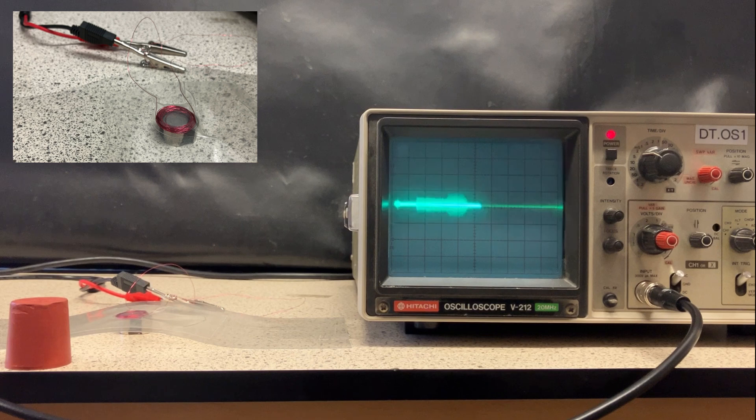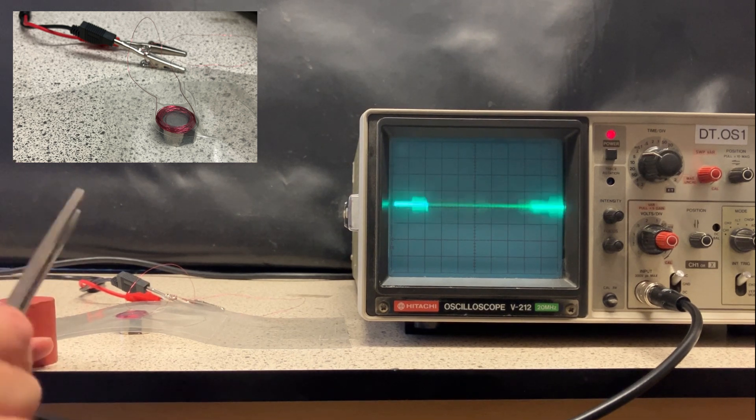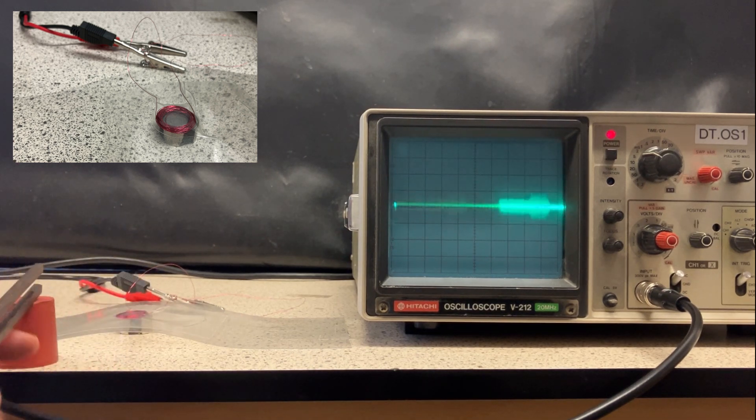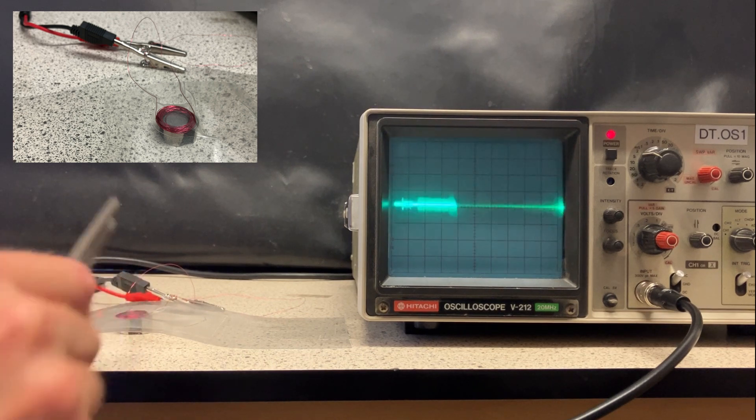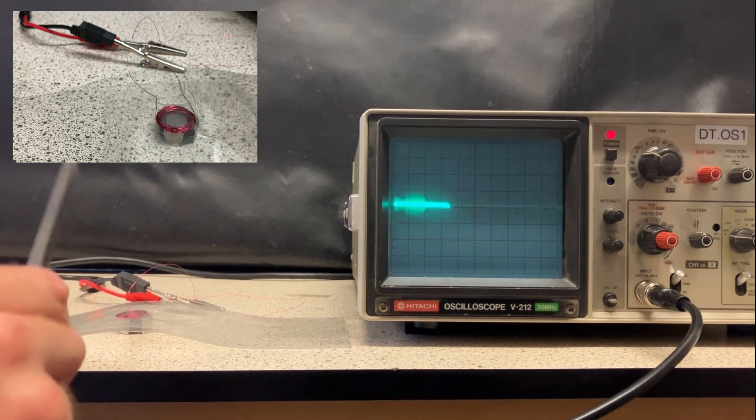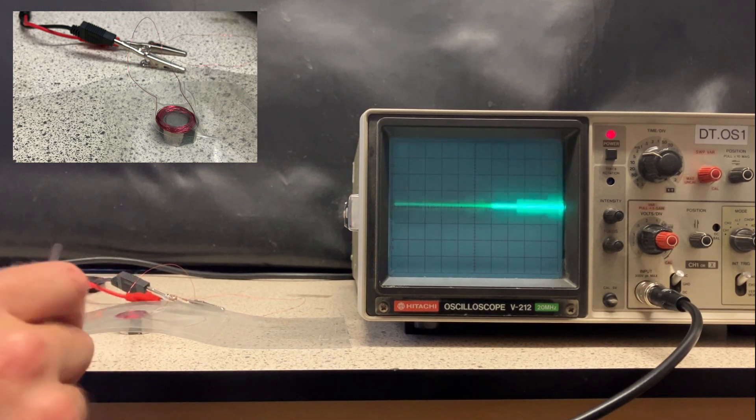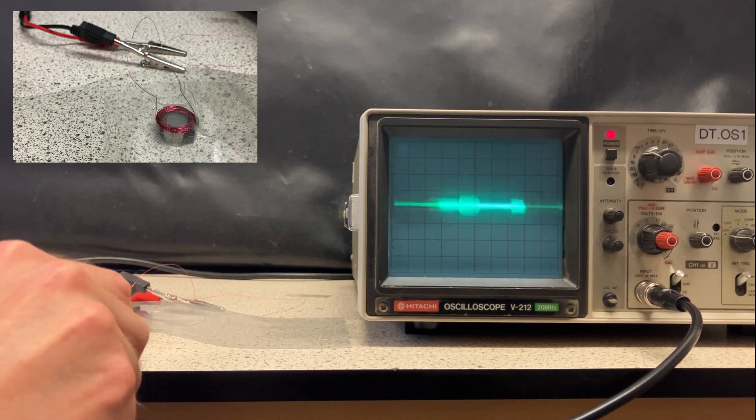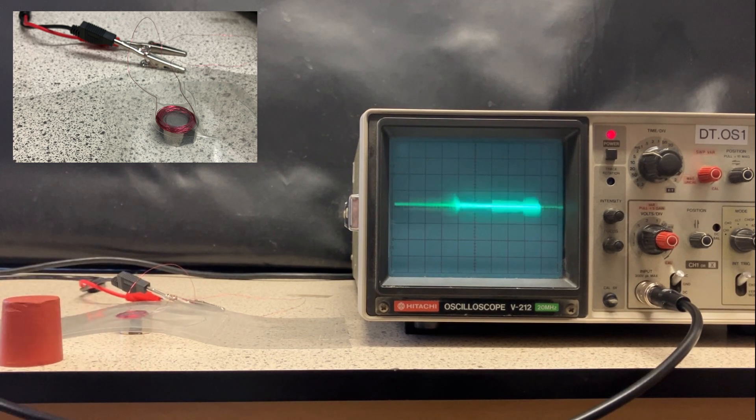Then when I hit the piece of plastic with a tuning fork, it makes the plastic vibrate, which makes the coil vibrate. Because it's moving relative to the magnet, it induces a potential difference, which as you can see is an alternating one displayed on the oscilloscope.